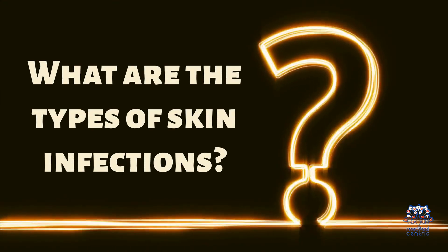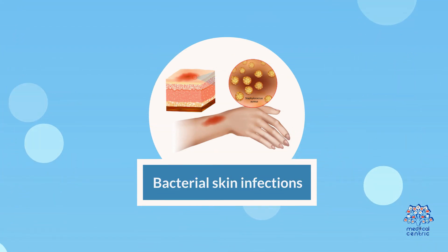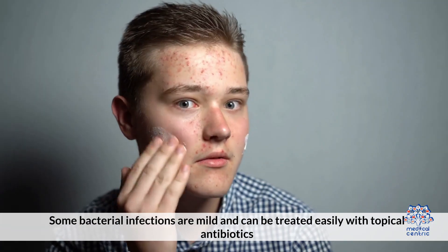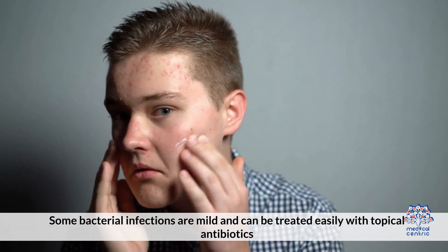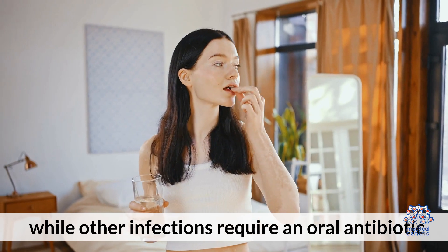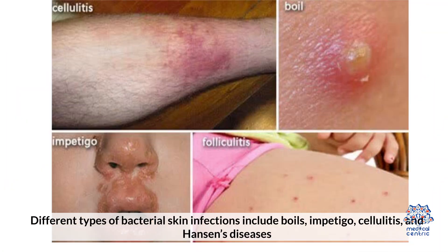What are the types of skin infections? 1. Bacterial skin infections begin as small red bumps which slowly increase in size. Some bacterial infections are mild and can be treated easily with topical antibiotics, while other infections require an oral antibiotic. Different types of bacterial skin infections include boils, impetigo, cellulitis, and Hansen's disease.